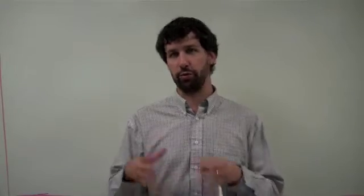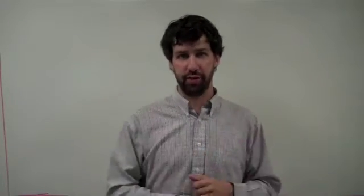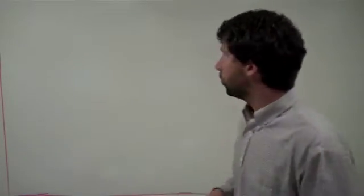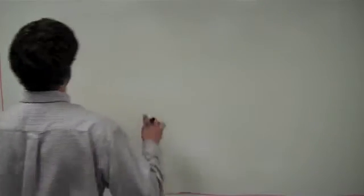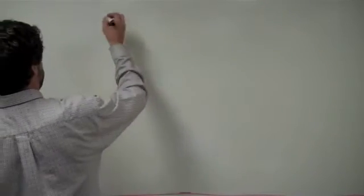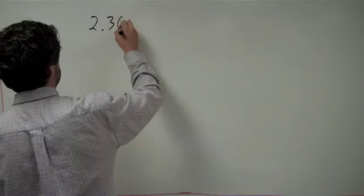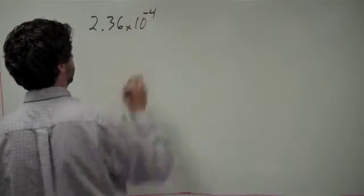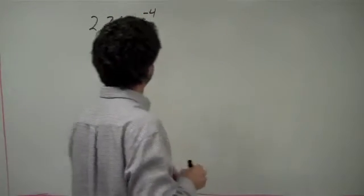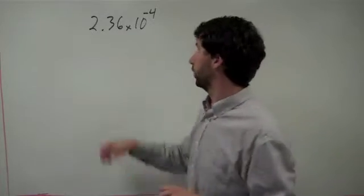This video will include both the description and the extra examples all in one video. What we're going to do here is first pick a number in scientific notation. Let's say 2.36 times 10 to the negative fourth. So that's something in scientific notation currently.